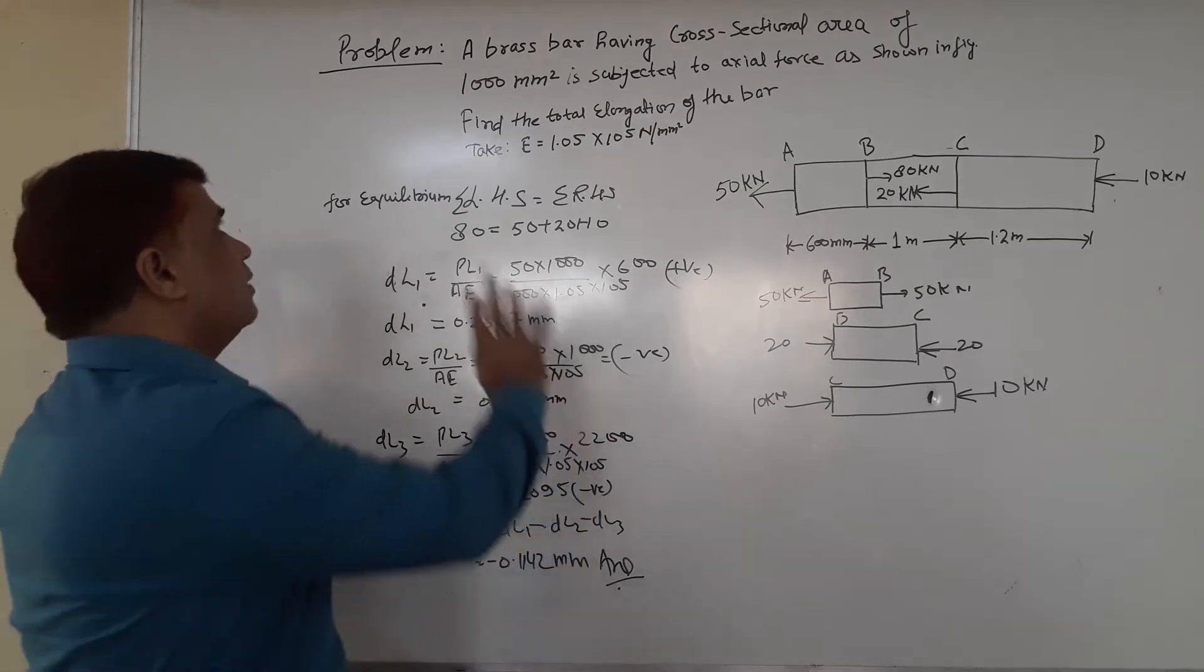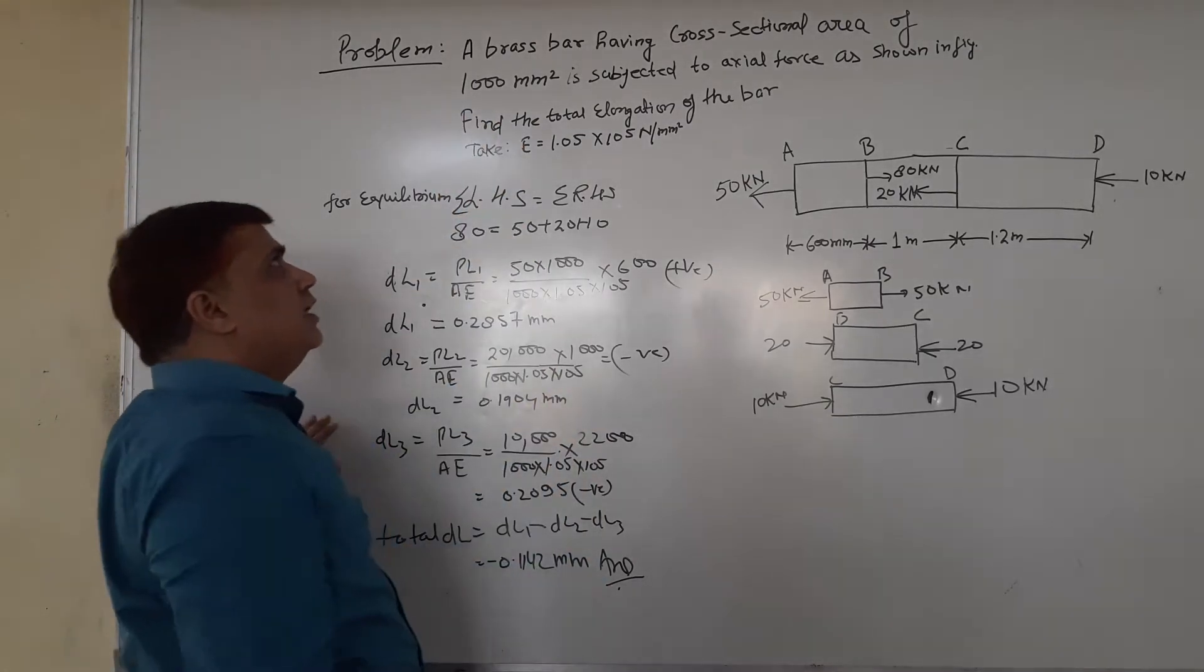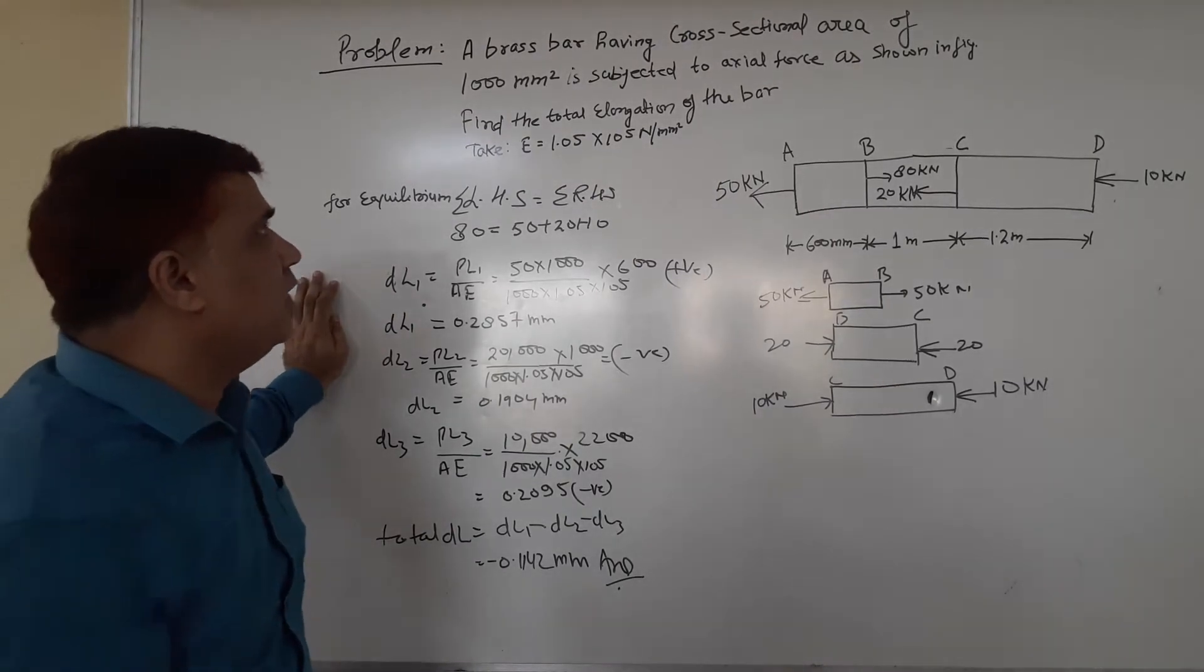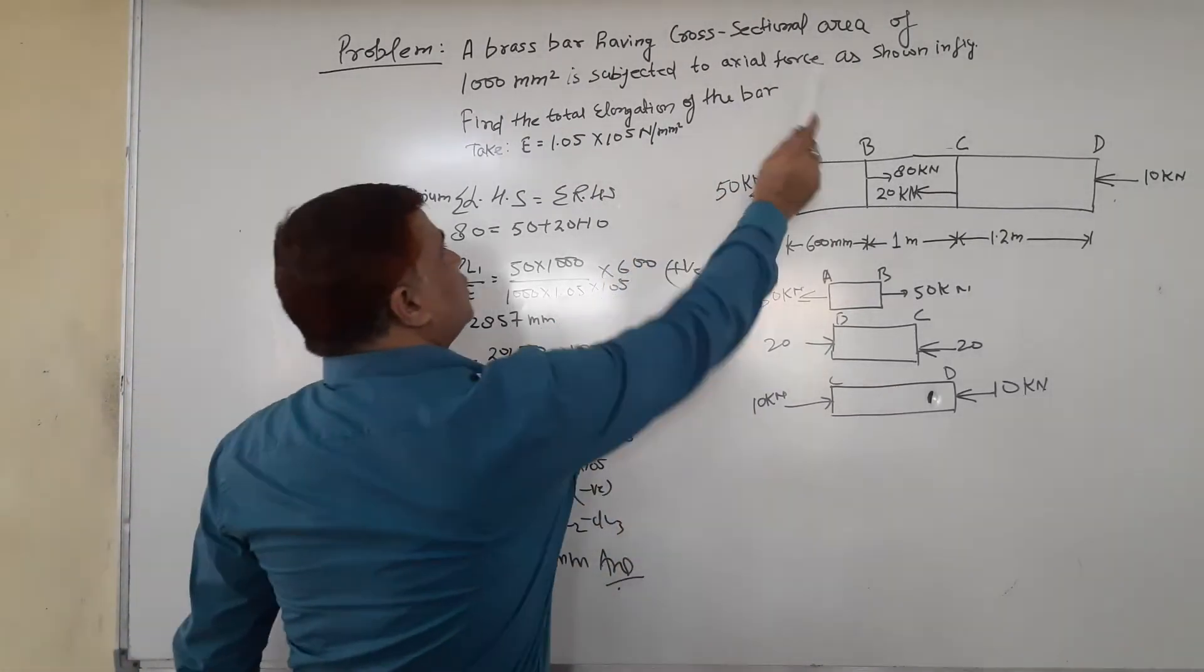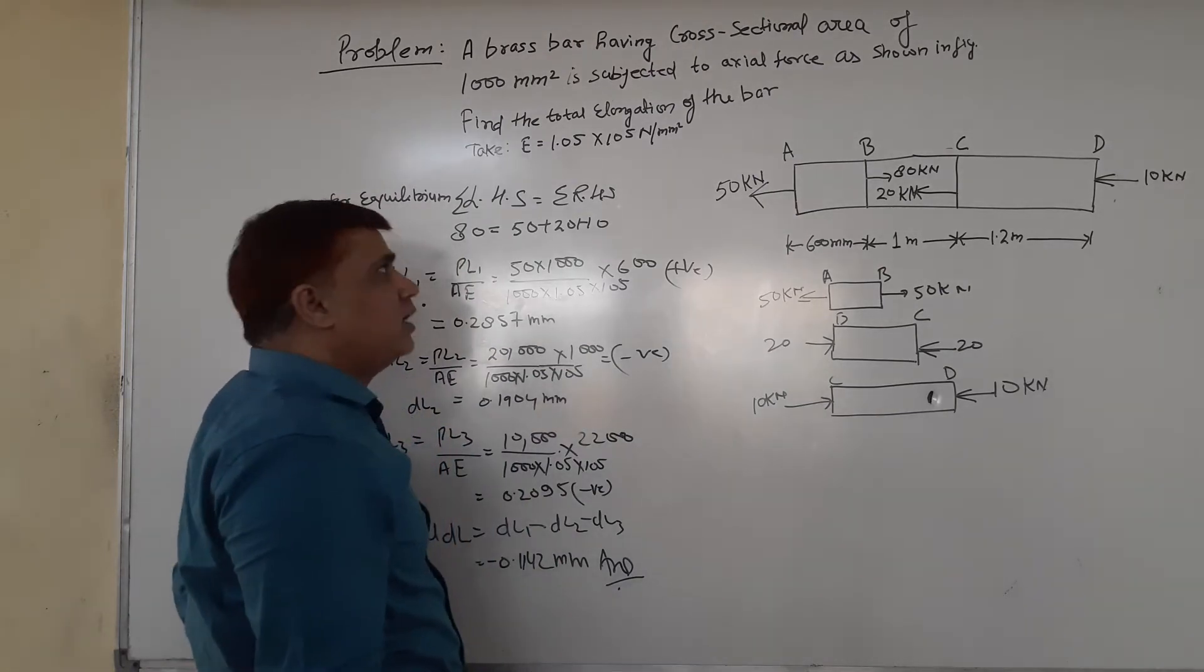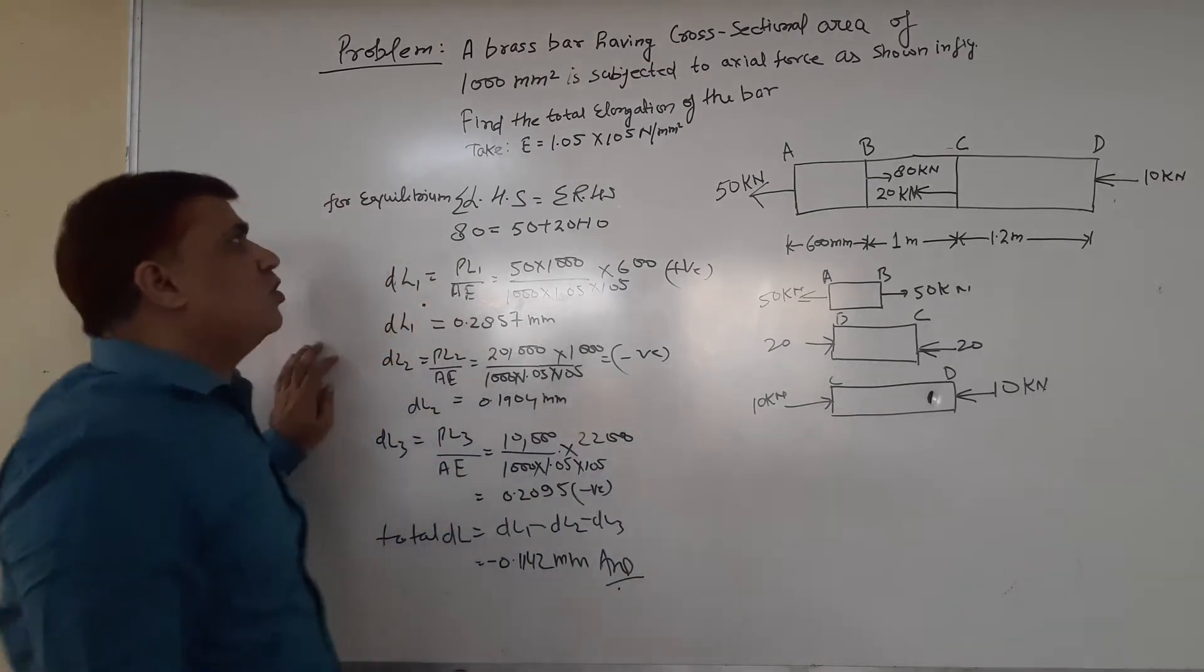The problem: a brass bar having a cross-sectional area of 1000 mm² is subjected to axial loads as shown in the figure.